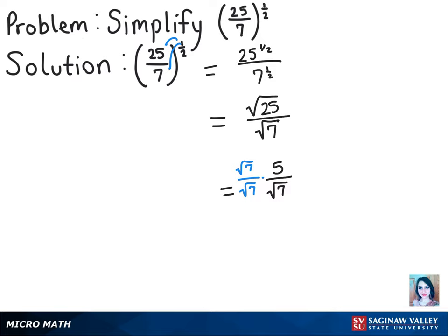What we'll have on the top is 5 times the square root of 7. And then for the denominator, we know that the square root of 7 times the square root of 7 is 7. So our final answer is 5 times the square root of 7 over 7.